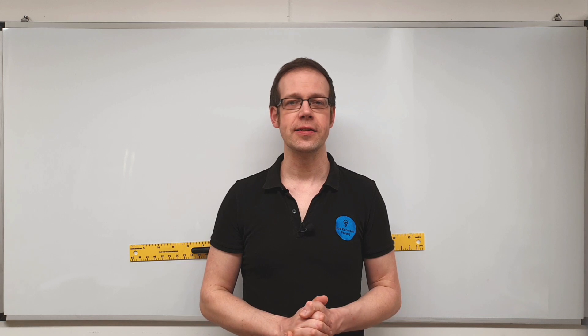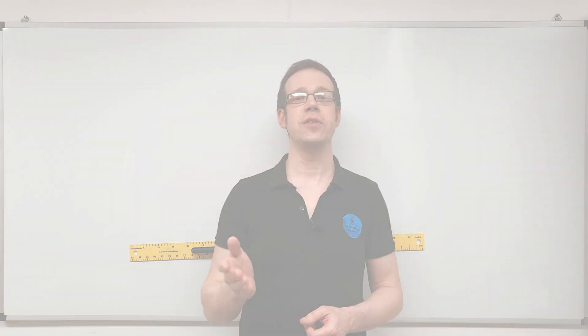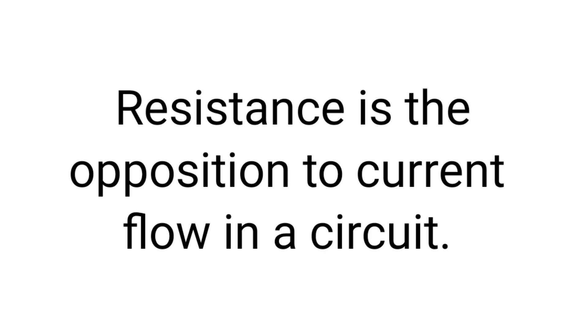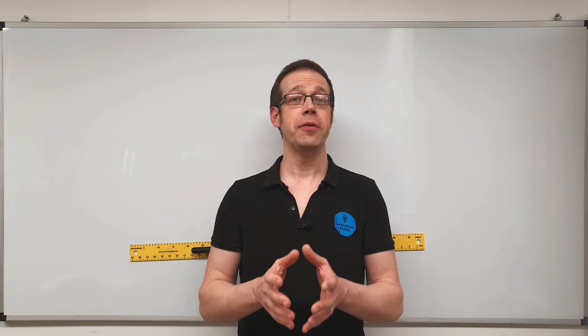Now if you've watched the entire series and can cast your mind back to when we first discussed resistance and the SR units for resistance, you may remember that I was quite pedantic about the way that I defined resistance, because it's often just described as the opposition to current flow in an electrical circuit. But in my definition I changed that to 'an opposition to current flow', meaning there is more than one type of opposition to current flow in an electrical circuit, and we're going to discuss those different types in this video.